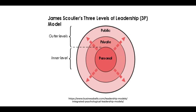Now we move on to the three LOLs — levels of leadership — proposed by James Cowler. It's the three-P model: personal, private, and public. The inner level is personal, and the outer level goes from private to public. Notice the direction of the arrows moves from inside to outside — from the personal to the public.